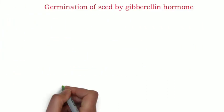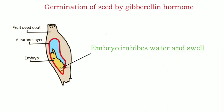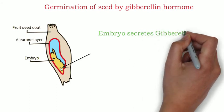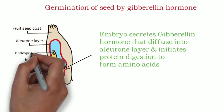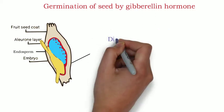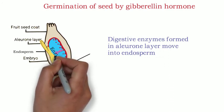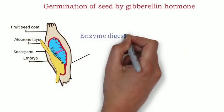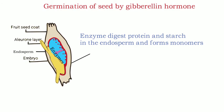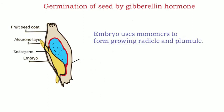Let us see how gibberellin functions in germination of a seed. When a plant is watered, the embryo imbibes water and swells up. It secretes gibberellin hormone which moves into the endosperm and then travels towards the aleurone layer. Here it triggers digestion of protein and synthesis of enzymes to form amino acids and alpha-amylase respectively. These enzymes, along with other nutrients, move into the endosperm where they digest starch and protein and convert them to monomers. The embryo uses these monomer molecules to form new cells, aiding in germination. The radicle and plumule develop into root and shoot respectively.